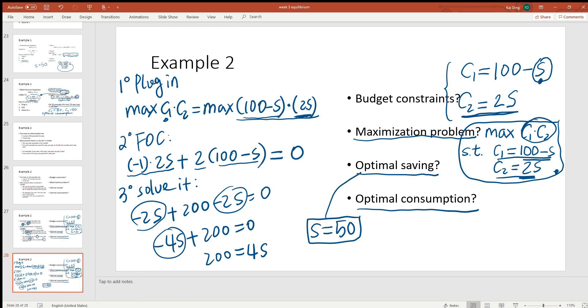Right, so again, our optimal saving is to save 50 avocados. Last step, to figure out optimal consumption, we just plug this into the consumption function. Well, c1 is 100 minus s. s is equal to 50, so 100 minus 50, that's equal to 50. So we're gonna eat 50 avocados this year.